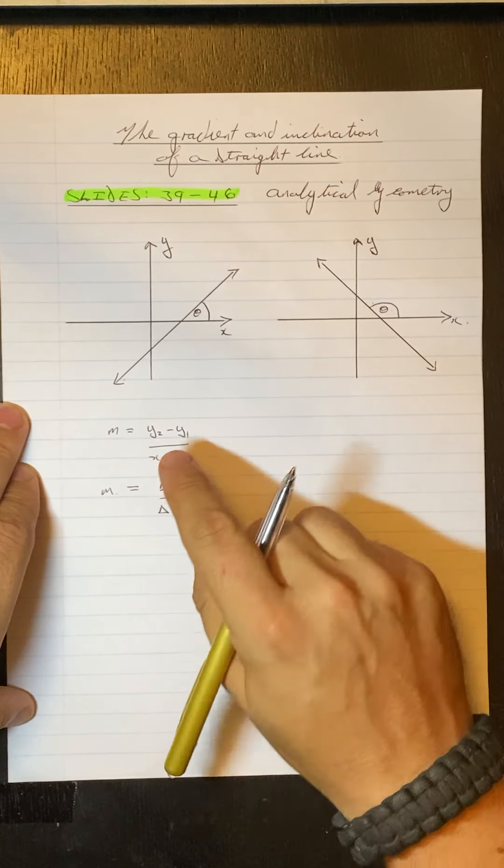Now we know another trig function that has that ratio of y to x and it's tan. So we know that tan of an angle is equal to y over x. Therefore, we know that tan theta will be equal to your gradient. And that is the formula for your angle of inclination.